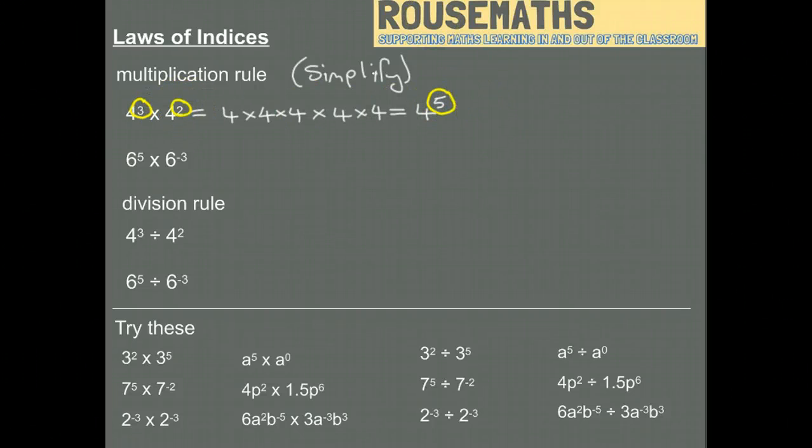You should spot at this point that the two powers we started with add together to give that one there. So actually we can just go straight to: it's the same as 4 cubed times 4 squared will be 4 to the power of whatever the two powers are added together. That's the quick way of doing it, and this is an explanation of why.